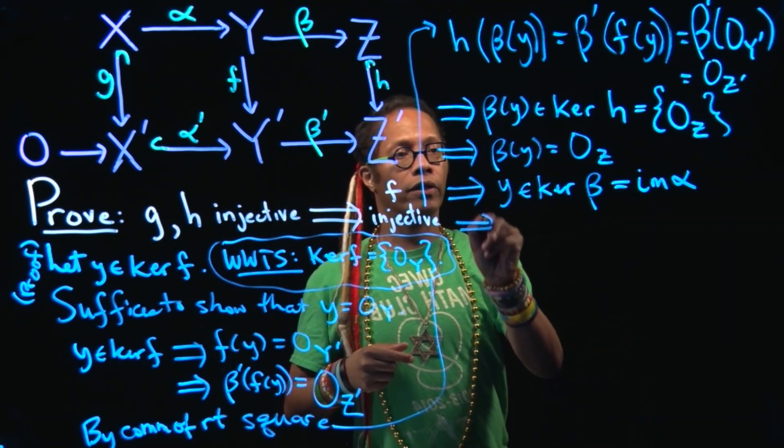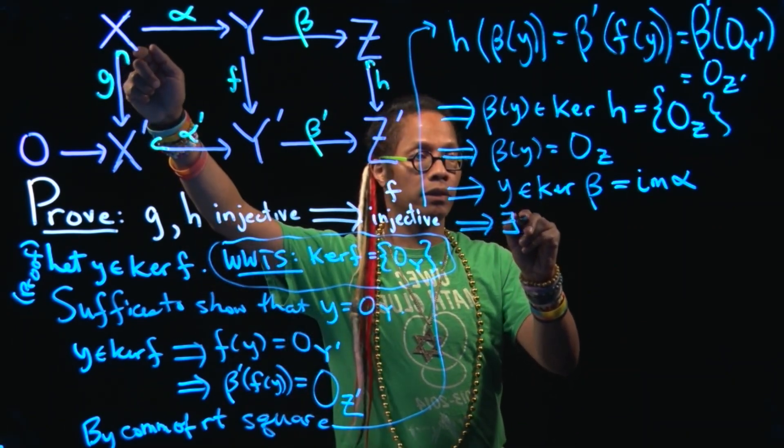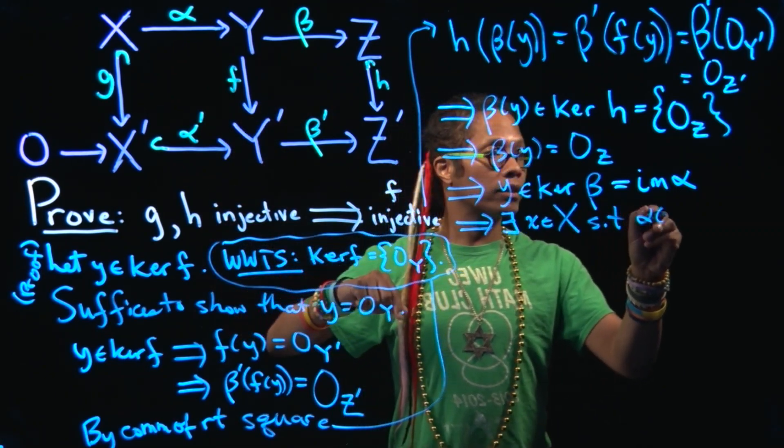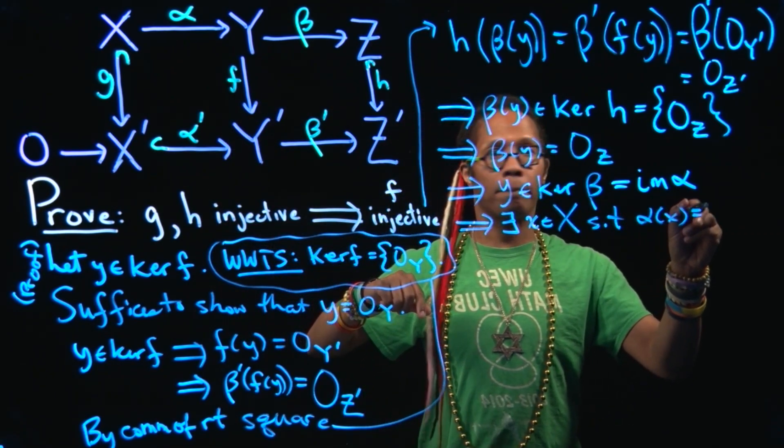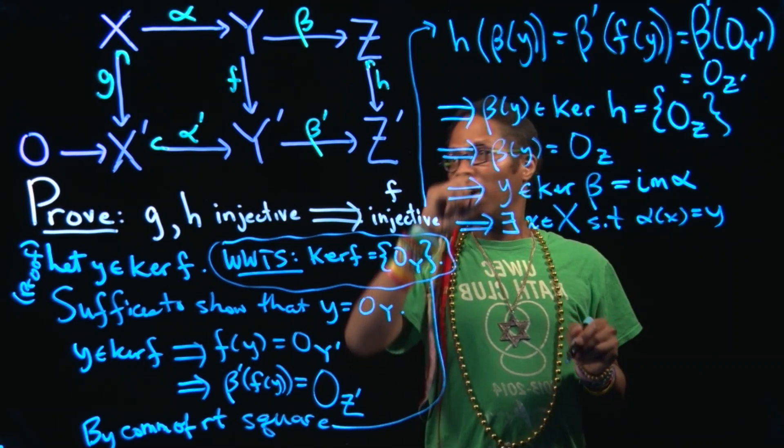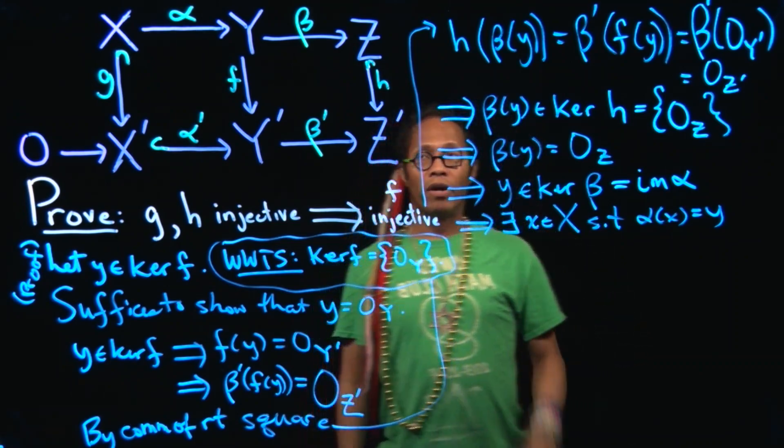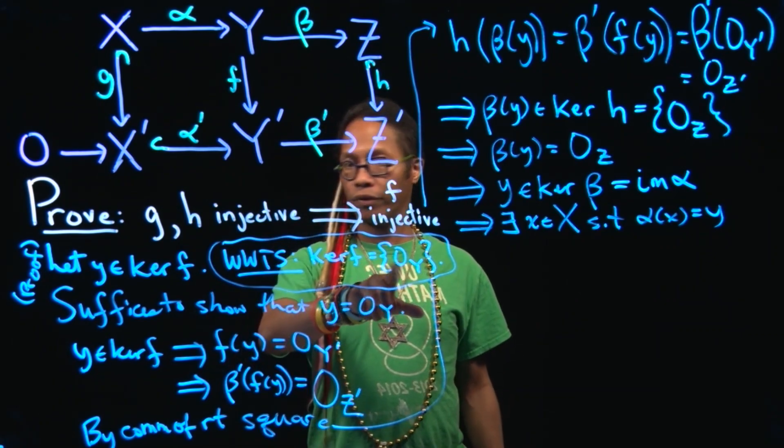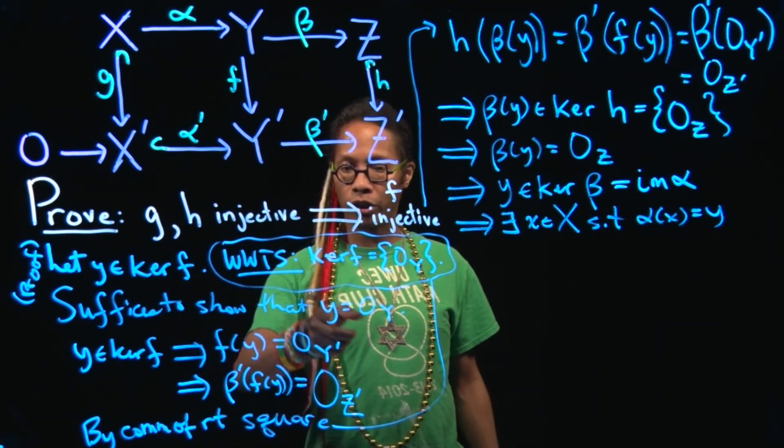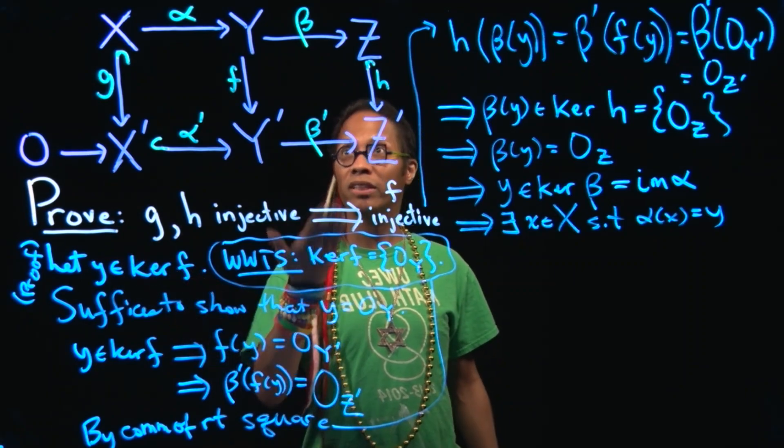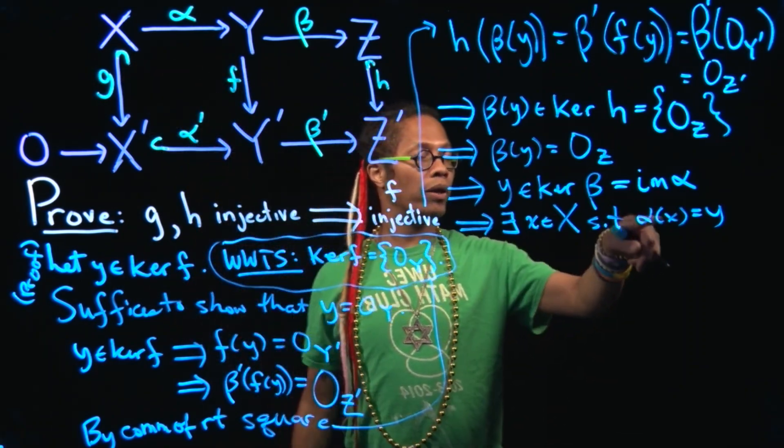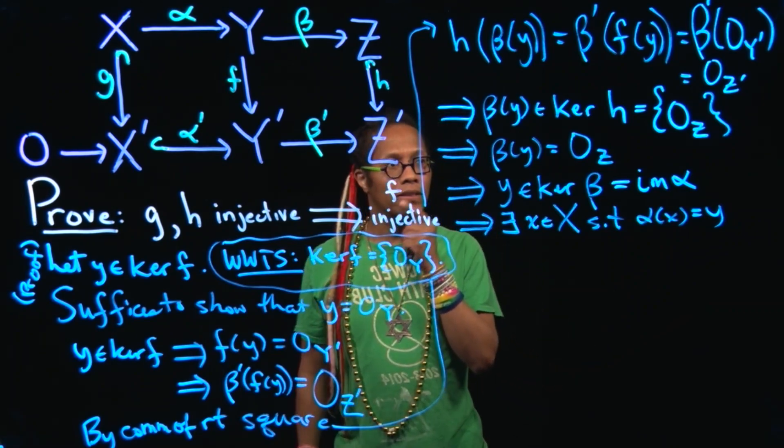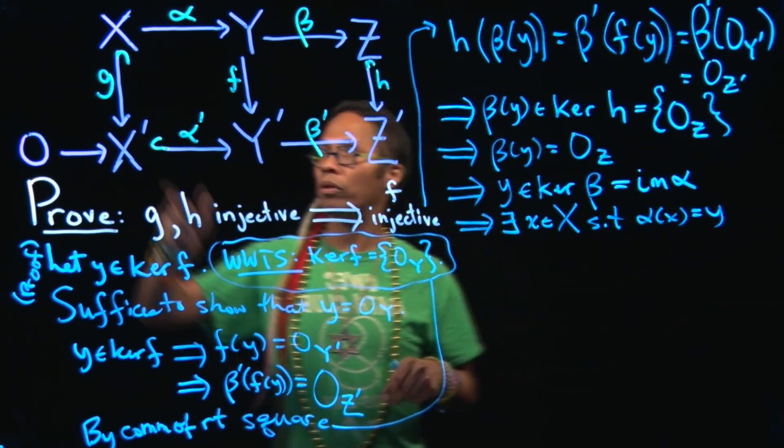So that means then that there exists an element X, little X, in big X such that alpha takes this little X to this Y. Okay. So now let's travel around the right square. Remember the goal. The goal is to show that the kernel is trivial, kernel of F is trivial. So it suffices to show that this Y that I picked in the kernel is actually equal to 0. I know that alpha X maps to this Y. So maybe we can get this X to be 0. Let's just see what we can do here.